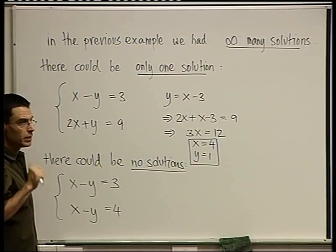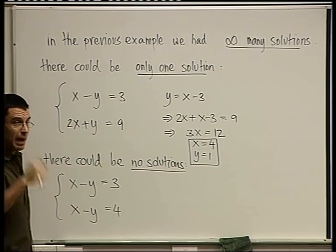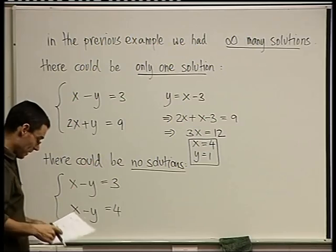Either none, or precisely one, or infinitely many. So there's a big gap between one and infinity.